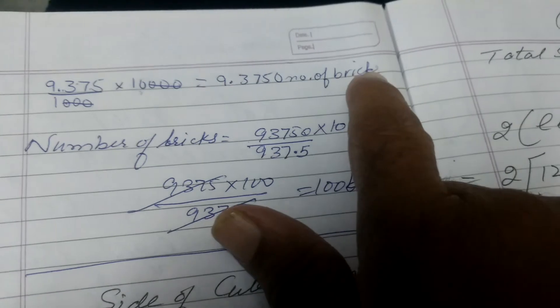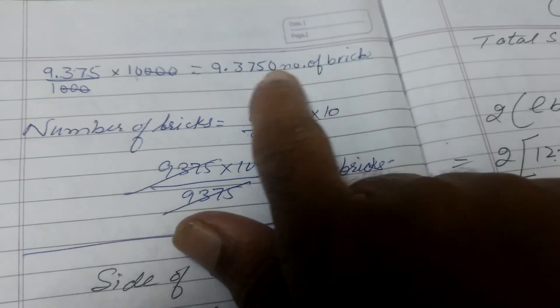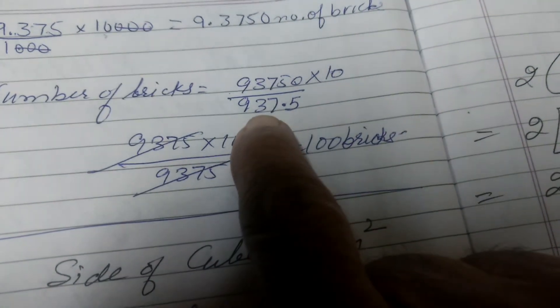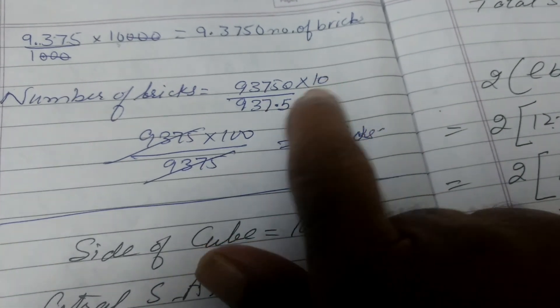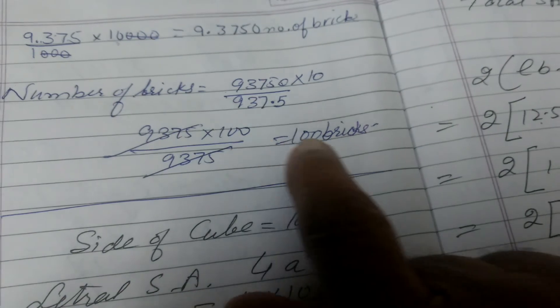Number of bricks: we take this total area in centimeter square and divide. We divide by the area per brick. The calculation gives 100 bricks.